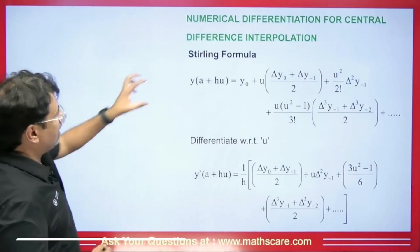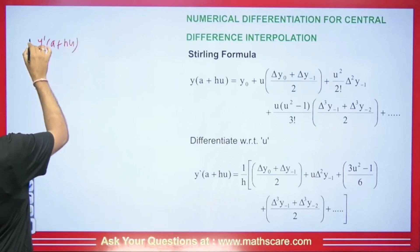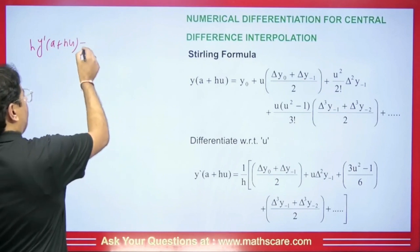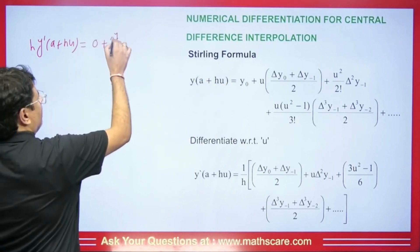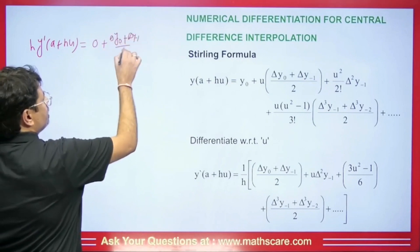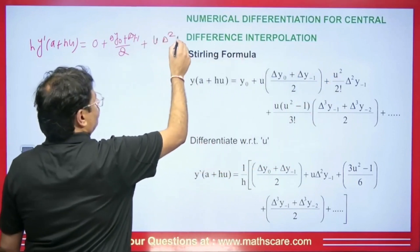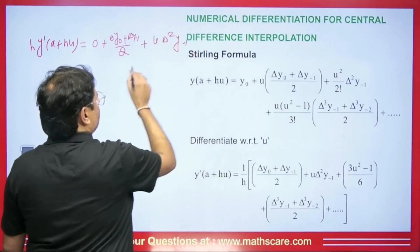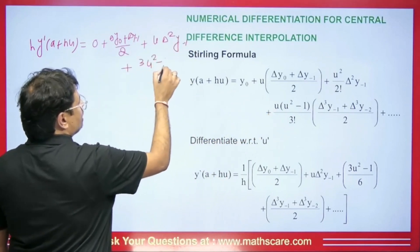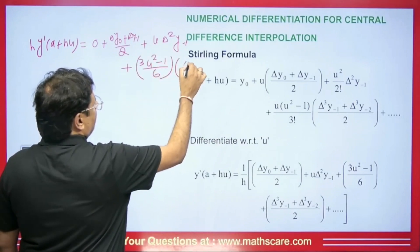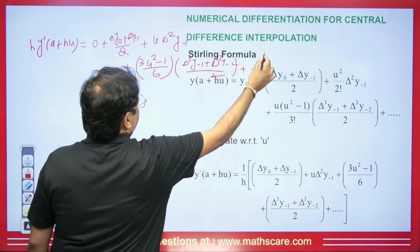If you need to find the derivative of this, we differentiate it with respect to U. It becomes Y'(A + HU), and H comes forward. The constant Y₀ term becomes zero. So we get (ΔY₀ + ΔY₋₁)/2, then 2U so 2 cancels giving U·Δ²Y₋₁, then the derivative of (U³ − U) is (3U² − 1)/6, giving (Δ³Y₋₁ + Δ³Y₋₂)/2. This formula continues in this way.